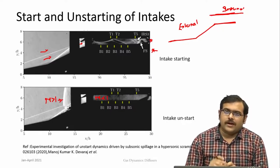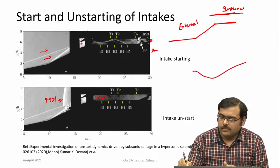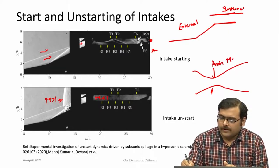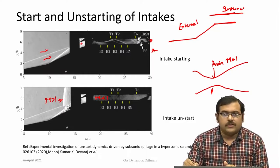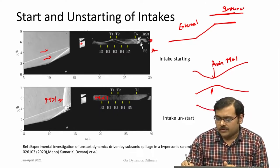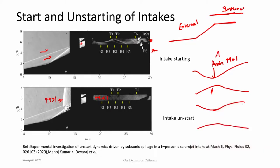Even though in ideal conditions the Mach number at the minimum area should be 1, in order to ensure the diffuser starts under any condition, a larger throat area must be provided — the minimum area must always be greater than A* so that the diffuser starts. Having understood these principles, another application of nozzles and diffusers is in the design of experimental test facilities, which will be covered in the next class.